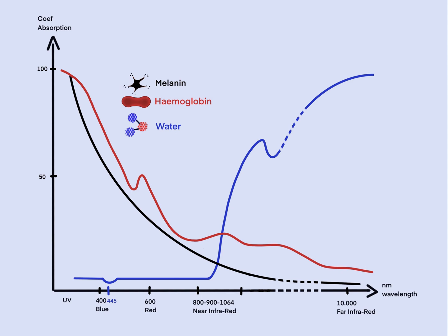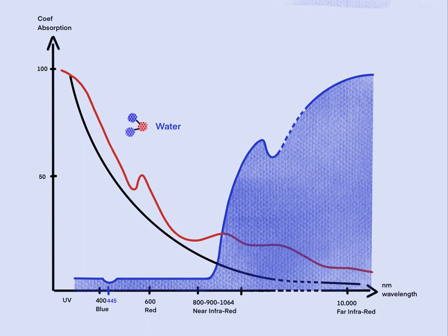This is a graph that represents the coefficient of absorption of the main chromophores depending on the wavelengths. The coefficient of water is steady with low absorption in the whole visible spectrum, then starts to rise in the near-infrared wavelengths between 900 and 1000 nanometers. Its maximum is in the far-infrared spectrum such as 10,000 nanometers, whereas its minimum is at blue wavelength 445 nanometers.